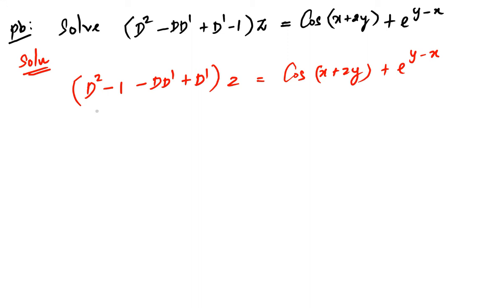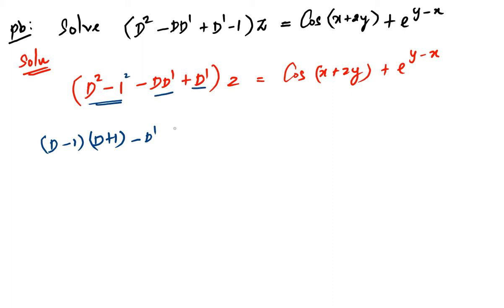I am going to rewrite d square minus 1 as d minus 1 times d plus 1. In the second and third terms, I am going to take minus d dash as a common term. The remaining gives d minus 1, d minus 1.